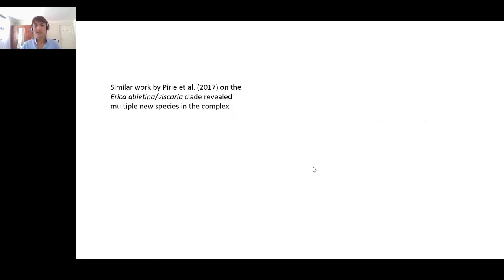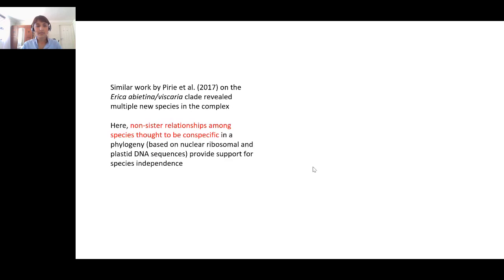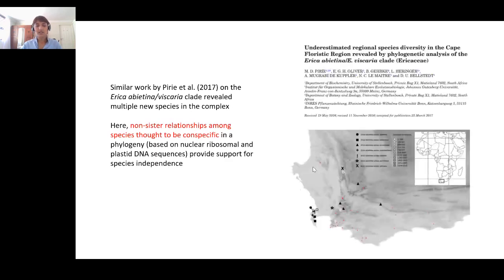The next study is by Perry and other authors, who worked on a clade of Ericas where species boundaries are unclear. They used non-sister relationships where sister relationships were expected to define species: if two populations thought to belong to the same species emerge on opposite ends of a phylogeny, that provides support for species independence. That was their standard for what constitutes a unique species.